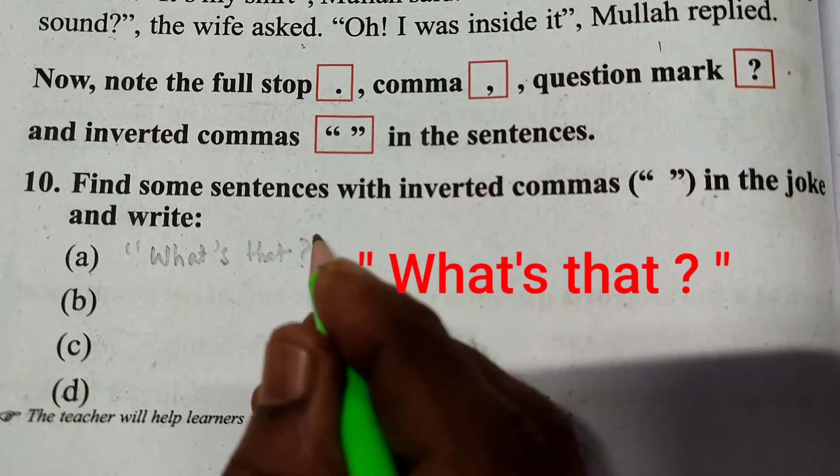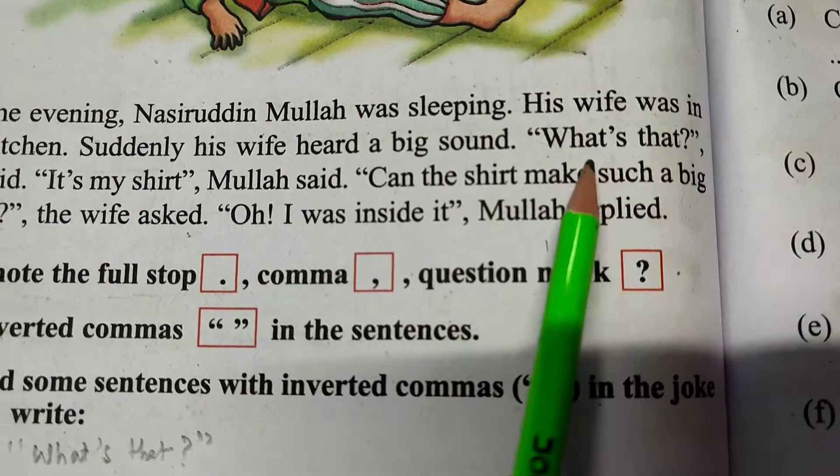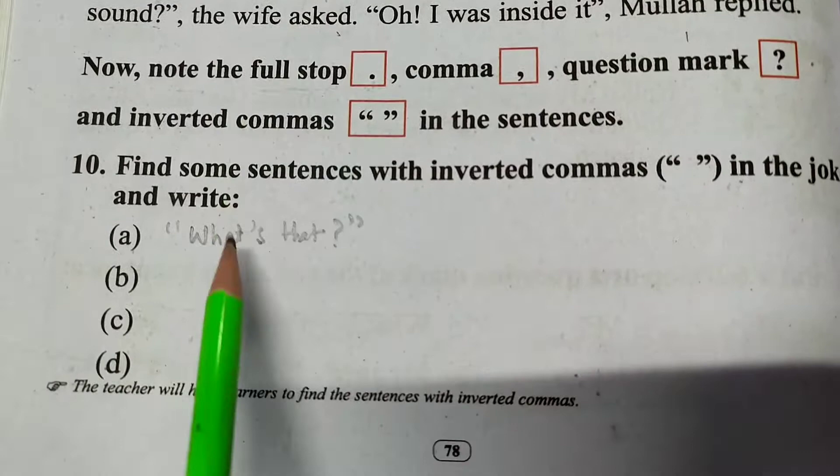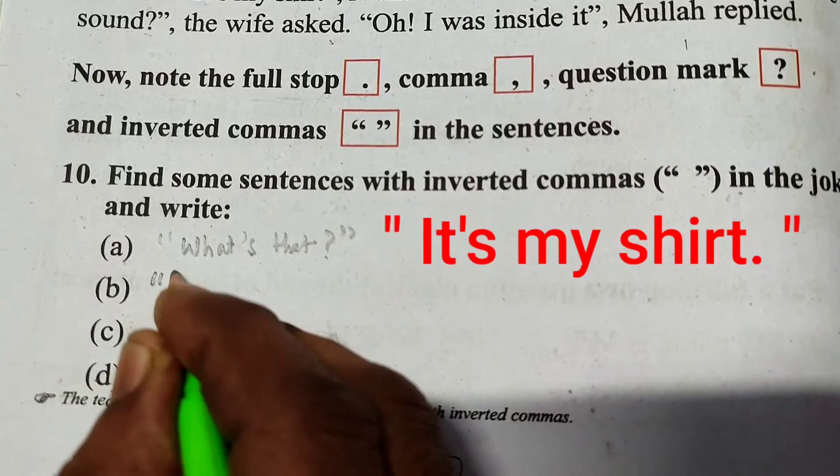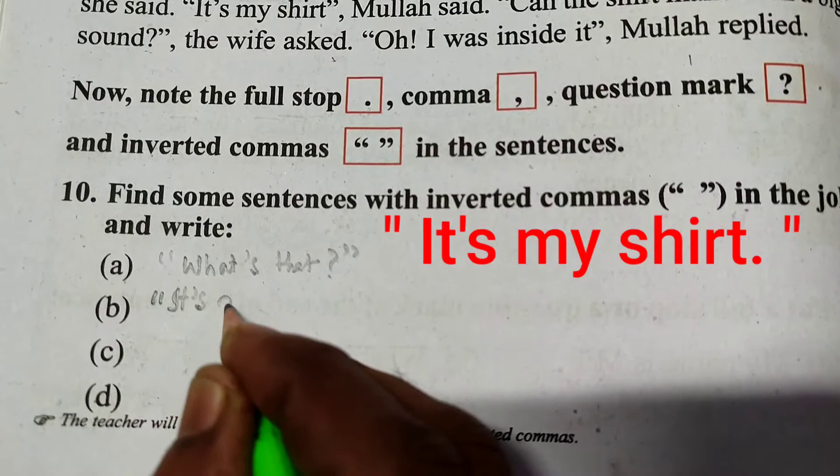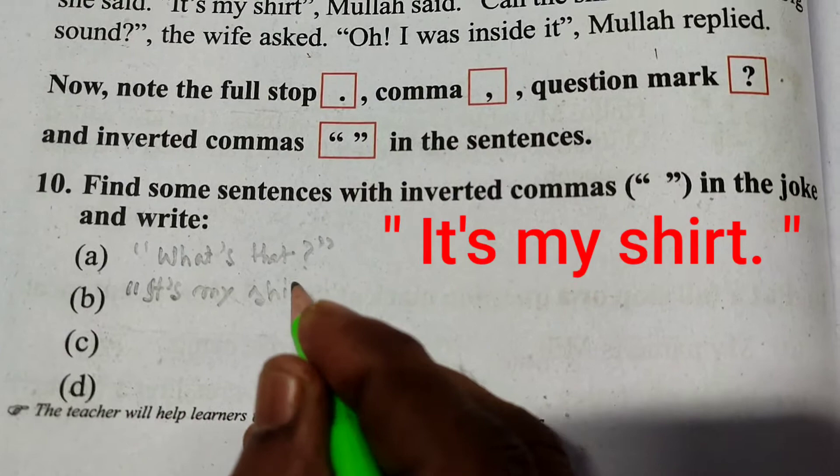Tabishot, aowada bhi chala. Inverted commas bita ashe. It's — inverted commas bita asha na hai — 'It's my shirt.' Here you can write it. Put it in inverted commas. 'It's my shirt.'